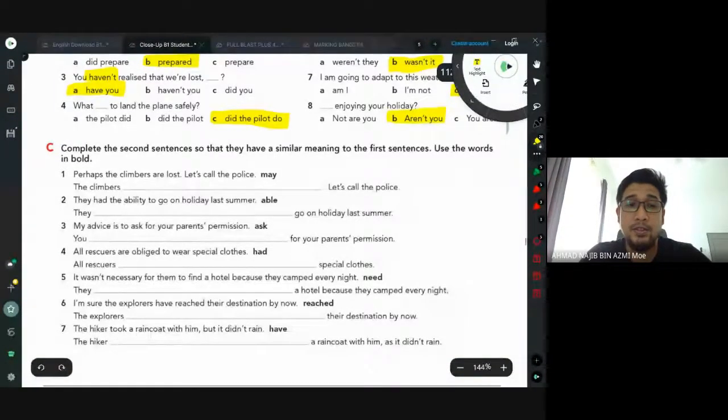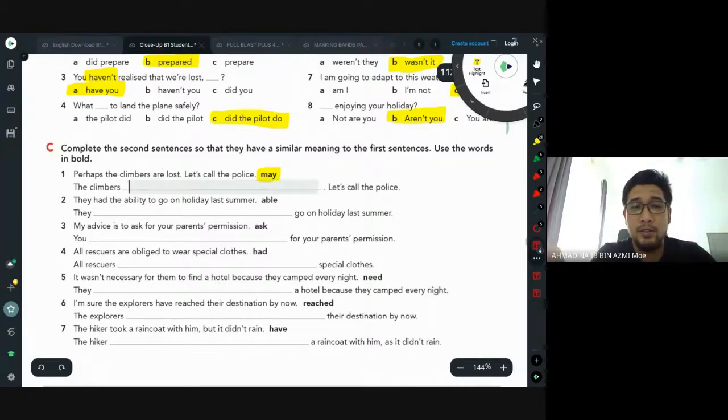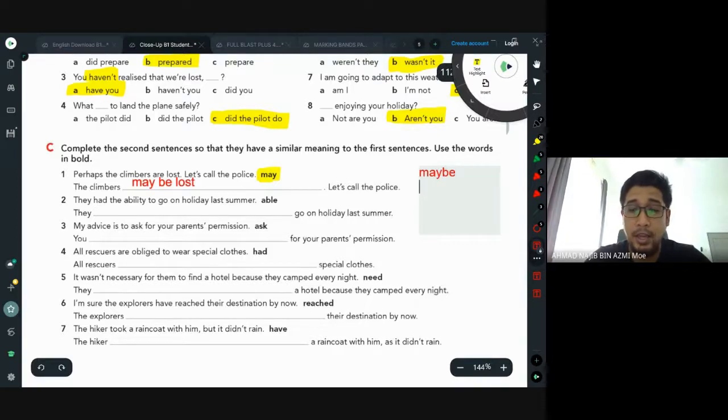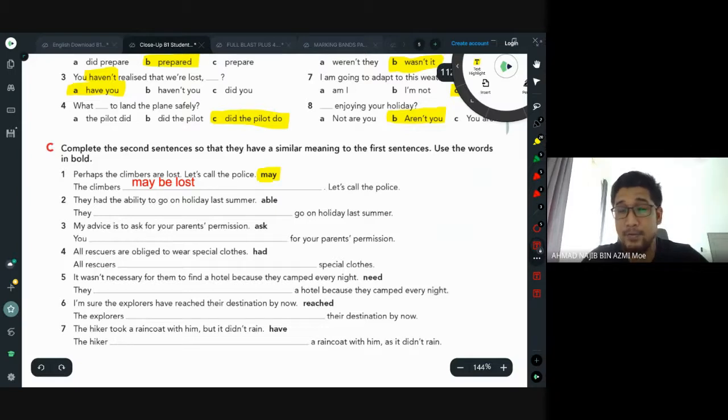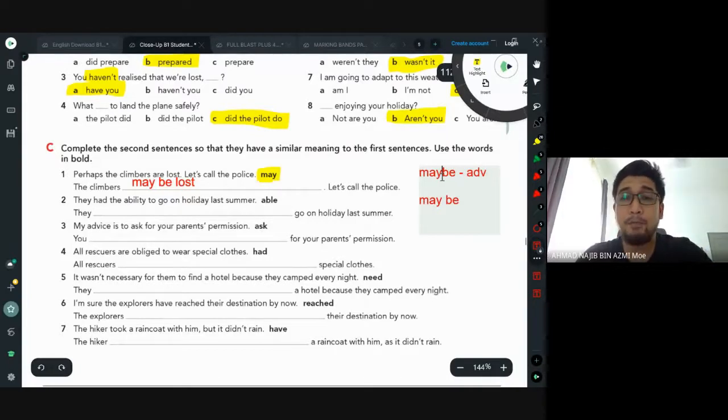This exercise you need to change the sentences so that it has a similar meaning but you use the words here. The first one: perhaps the climbers are lost, let's call the police. So 'the climbers' using the word 'may' - it should be 'may be lost'. And just to be clear, the word 'maybe' and 'may be' are different. Okay, 'maybe' in the first one is an adverb. For example, 'are you going to the party next weekend?' We use this one: maybe. Kalau 'perhaps', it is this one: may be lost. It's the same as might be.